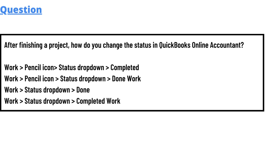So we have some options here: work pencil status drop-down complete, work pencil icon status drop-down done, work status drop-down done, work status drop-down and completed work. The answer to the question is: to change the status of a finished project in QuickBooks Online Accountant, you should follow these steps.